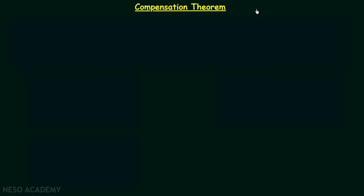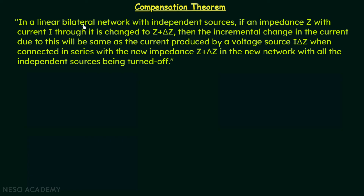Based on this basic concept we have the compensation theorem. According to its statement, in a linear bilateral network with independent sources, if an impedance Z with current I through it is changed to Z plus delta Z, then the incremental change in current due to this will be the same as the current produced by a voltage source I·delta Z when connected in series with the new impedance Z plus delta Z, in the new network with all independent sources turned off.